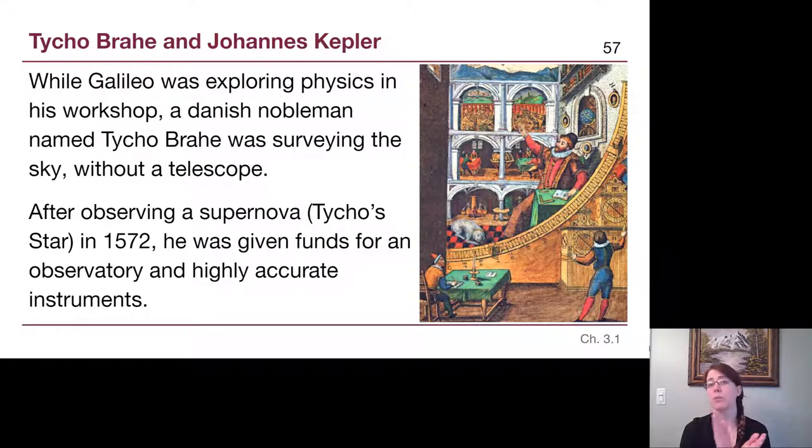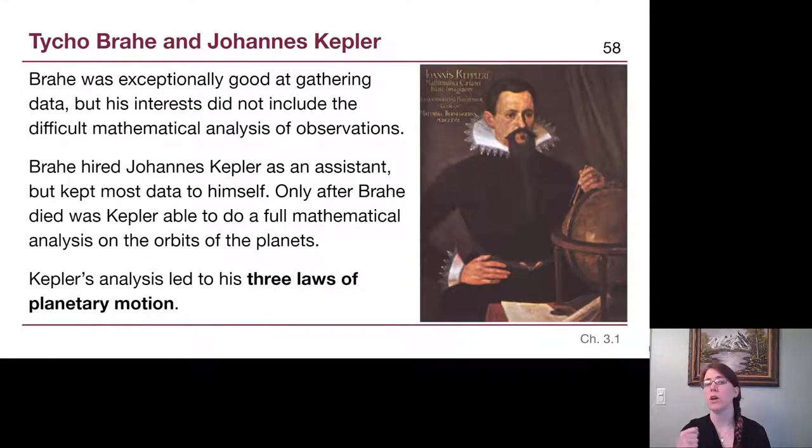The problem is that star that he found faded away after a couple of weeks. What he actually saw was a supernova. It's a single explosion of a massive star. And so Tycho's star wasn't really a star at all, and yet he got to have a really decked out observatory and highly accurate instruments. Not telescopes, but angle measurements. One of the biggest things that he was known for was being really paranoid that someone else would get credit for his work.